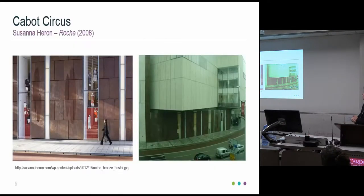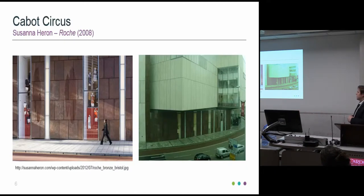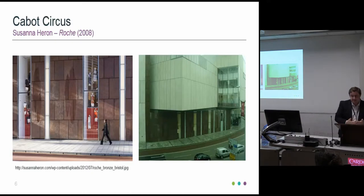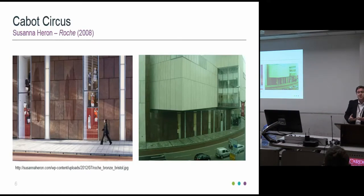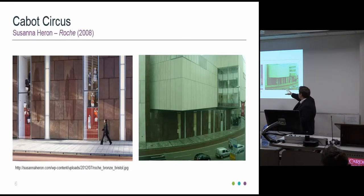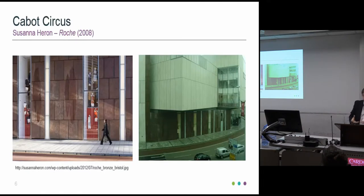Here's a nice example. This is a piece called Roche by Susanna Heron. It's a structural component of the Harvey Nichols House of Fraser building at Cabot Circus. You can just about see there's an etching on the bronze work and on the glass above. Heron spent time in Bristol, walking around, trying to understand what the city is, and she decided that it has a certain quality of light that she linked to its maritime history and the river running through the city. She turned that into this design, which is etched on the panels and on the glass, and has been incorporated into the structure of the shopping centre.